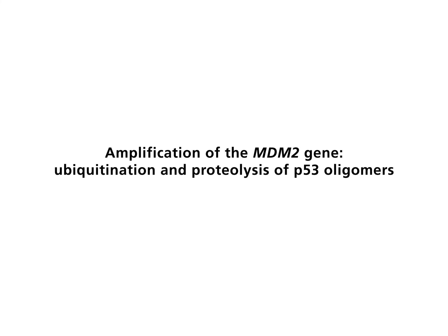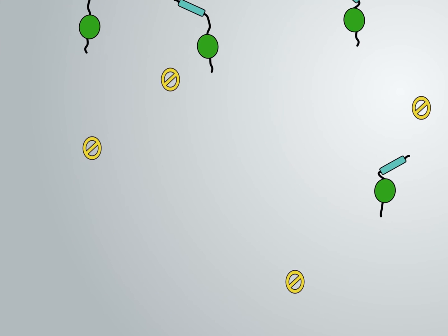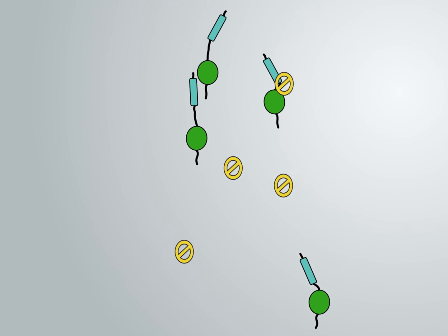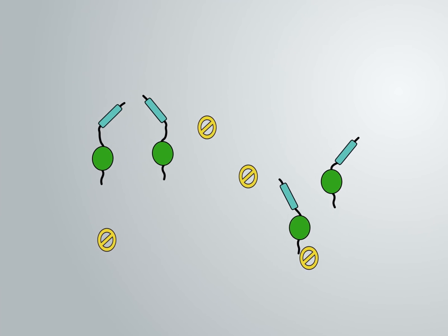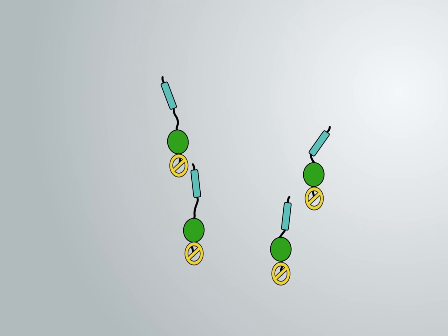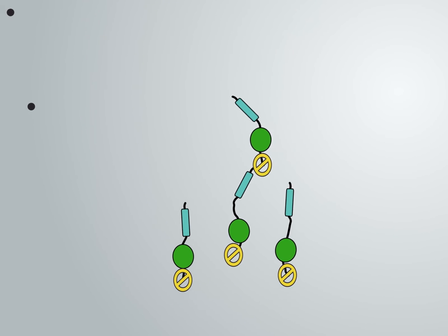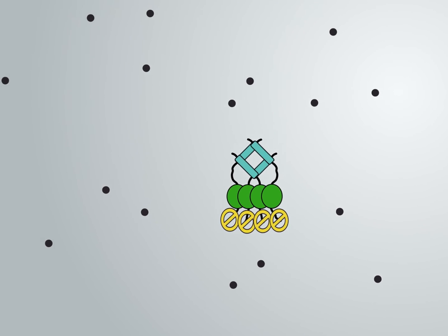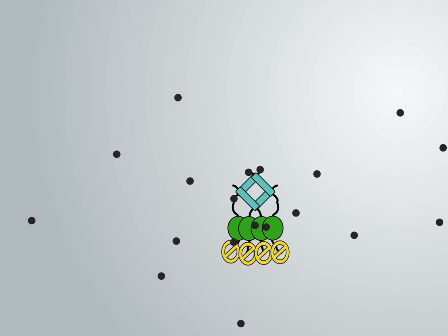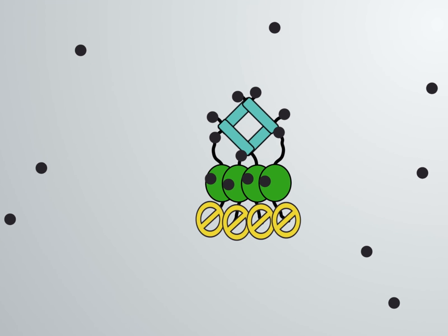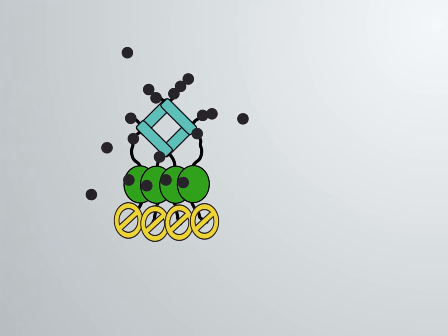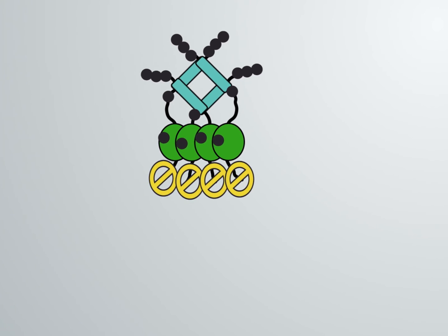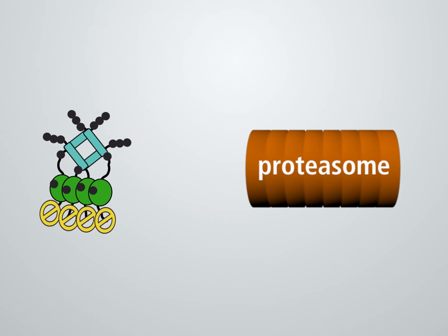Amplification of the MDM2 gene, ubiquitination and proteolysis of P53 oligomers. MDM2 is an E3 ubiquitin ligase. After binding to the N-terminal domain of P53, MDM2 is involved in the formation of multi-ubiquitin chains from ubiquitin monomers, indicated as black dots. Ubiquitinated P53 is degraded in the proteasome.